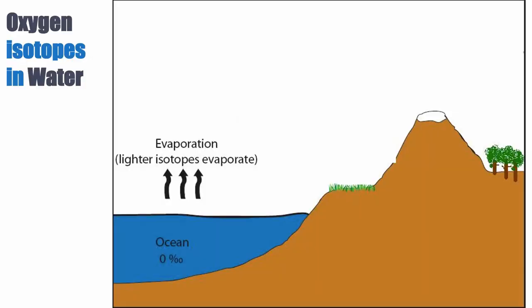Fractionation means that you will not have the same isotopic ratio in your product as in your initial material, because the physical-chemical processes favor one of the two isotopes. Typically during evaporation, you more easily evaporate the lighter H₂O molecule, so you preferentially concentrate the molecule with more O16 in the water vapor. The clouds end up with a δO18 of minus 10 per mil — that means 10 per mil depleted compared to the ocean value of zero SMOW.